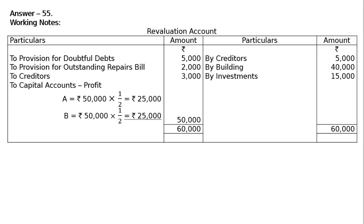The total amounts to 50,000. This is the answer of the revaluation account. We can have three entries: first — creditors account debited, building account debited, investment account debited to revaluation 60,000. Second — revaluation account debited to provision for debts 5,000, provision for outstanding bill for repairs 2,000, creditors 3,000 — total 10,000. Third — revaluation account debited to A's capital 25,000 and B's capital 25,000.